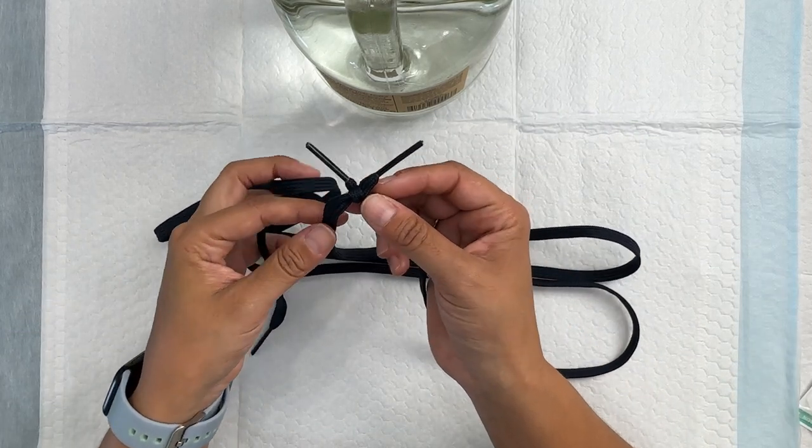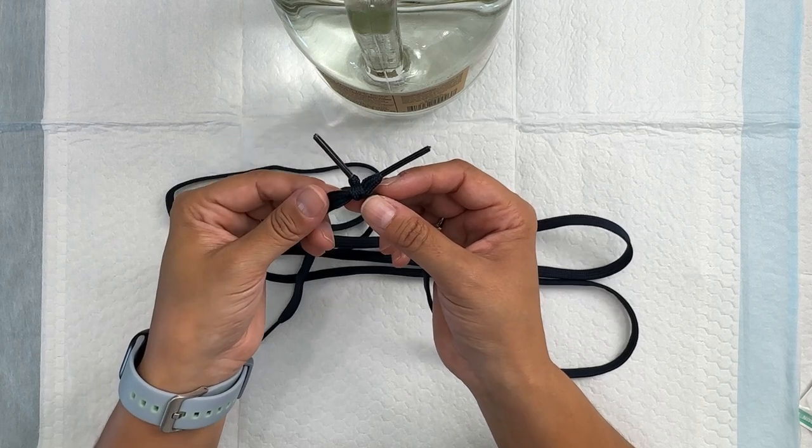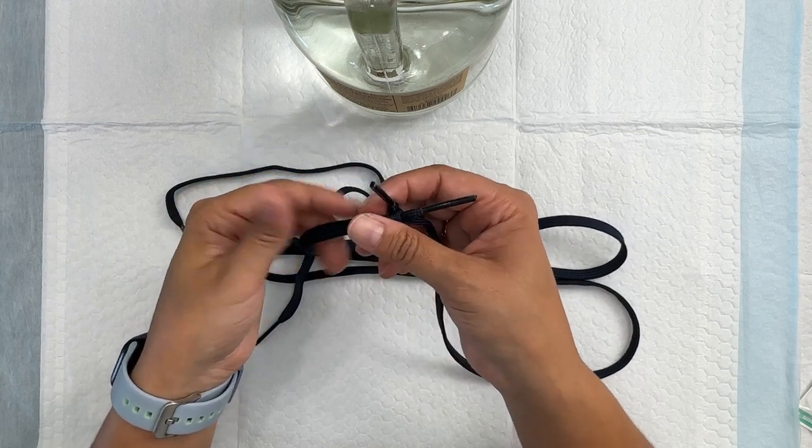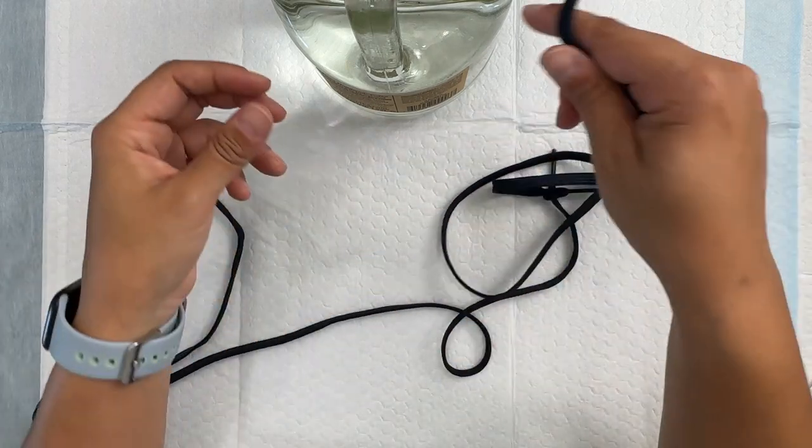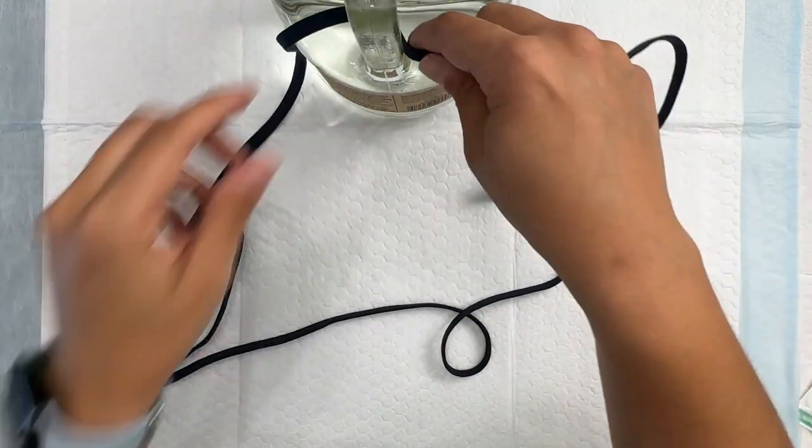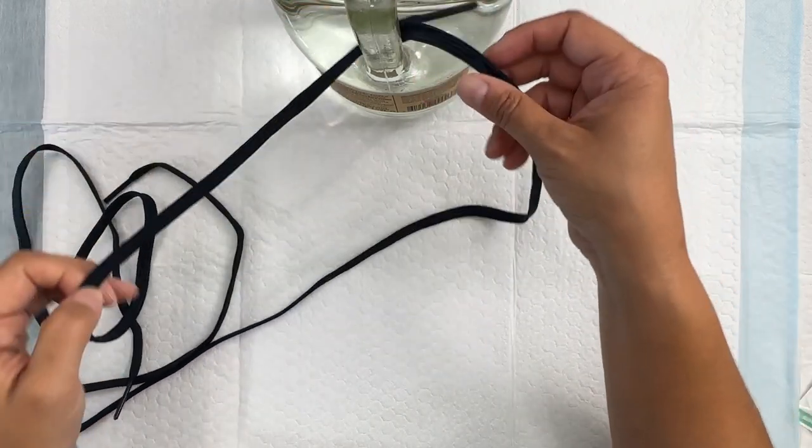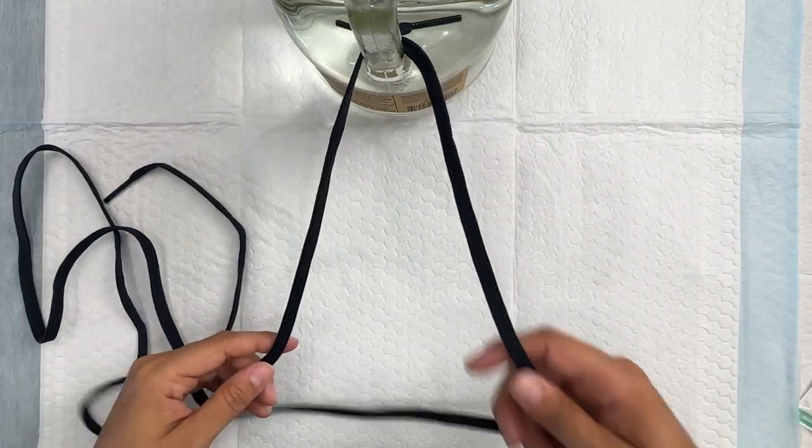It's ideal to have one shoestring in one color and one shoestring in another color. In my case, I don't have that, so I'm just going to use what I have. The first thing you would do is throw the stitch. I'm going to throw it, pull it through, and from here I'm going to do a two-handed knot tie.